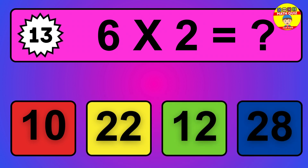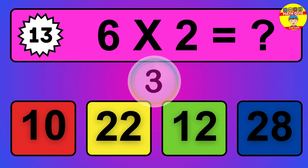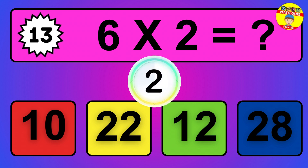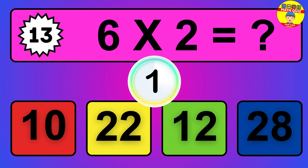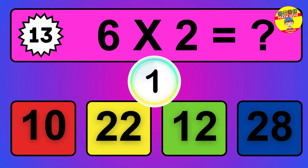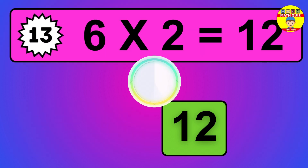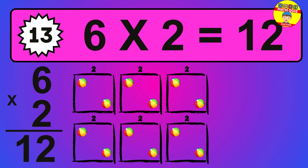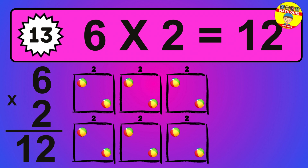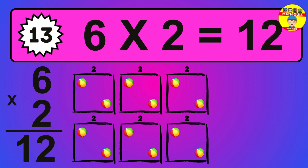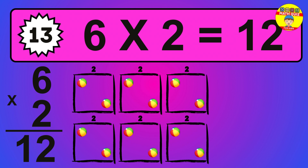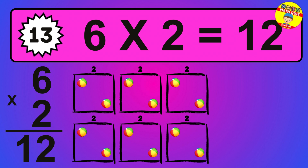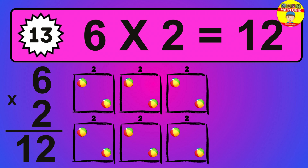Question 13. 6 times 2 equals what? So the answer is 6 times 2 is 12. To calculate, we have 6 groups with 2 balls each one. So how many balls do we have? 12 balls.